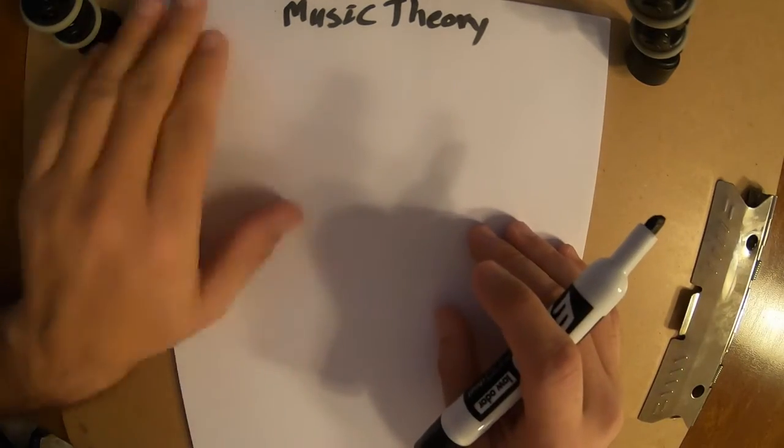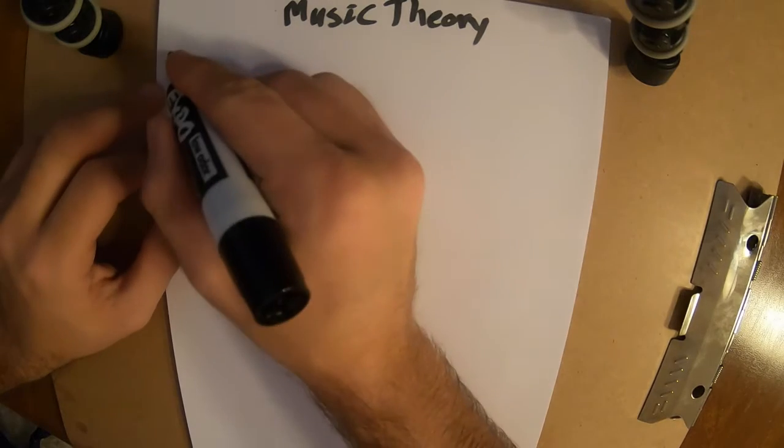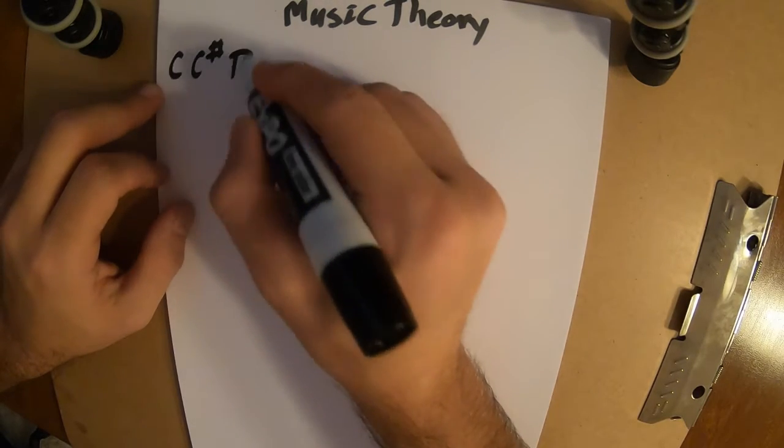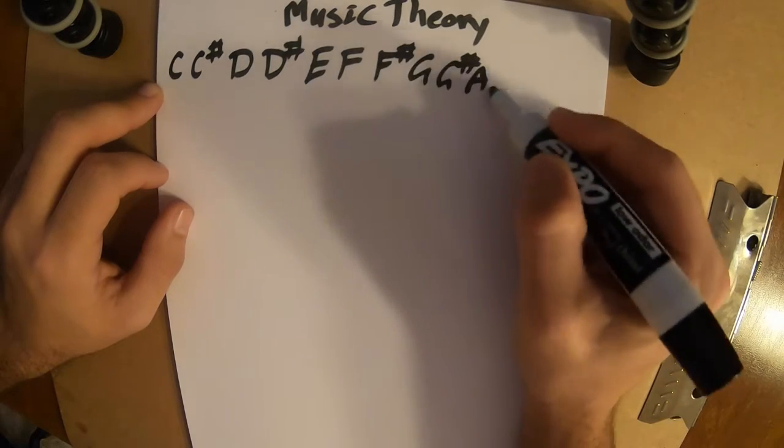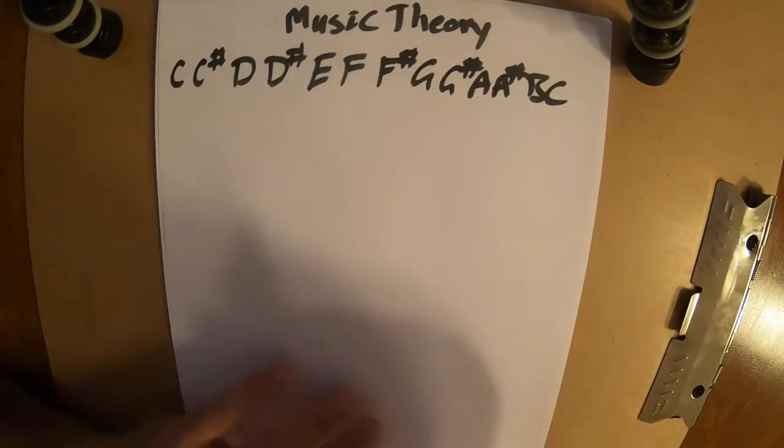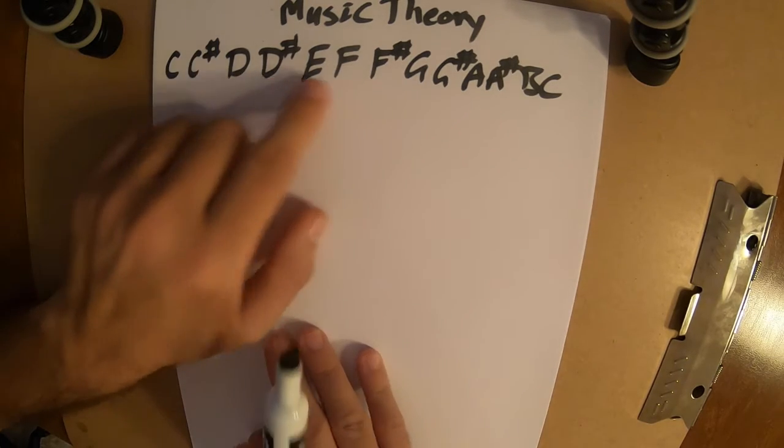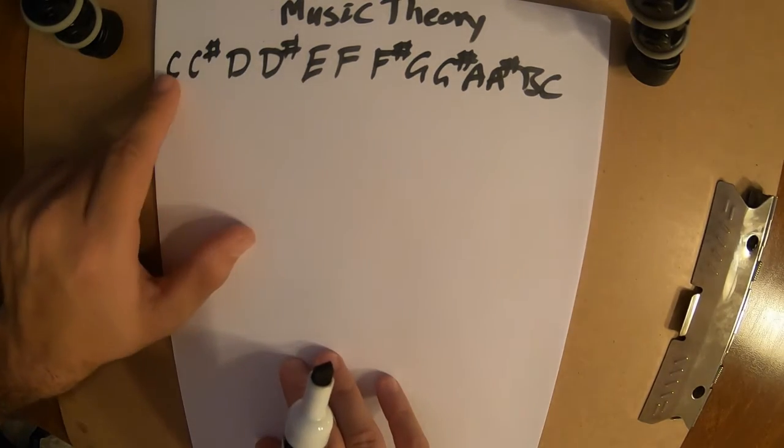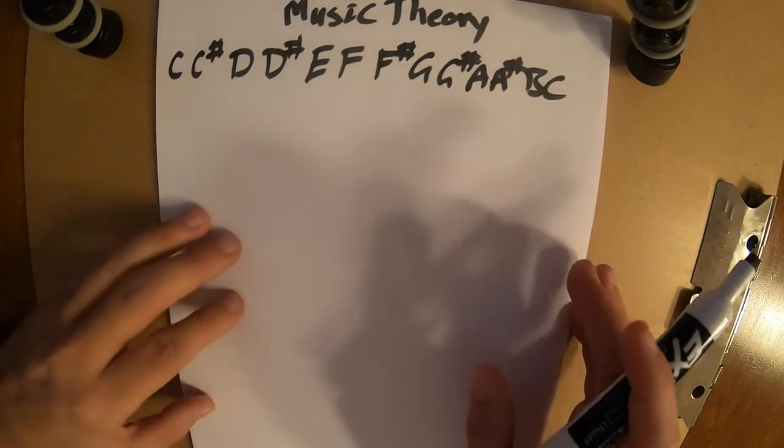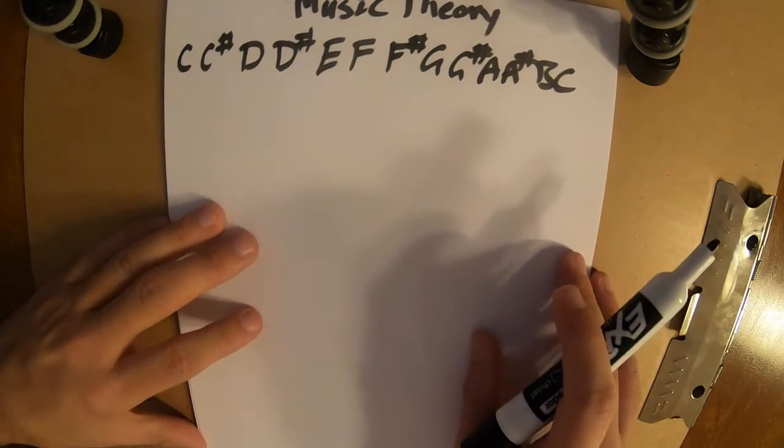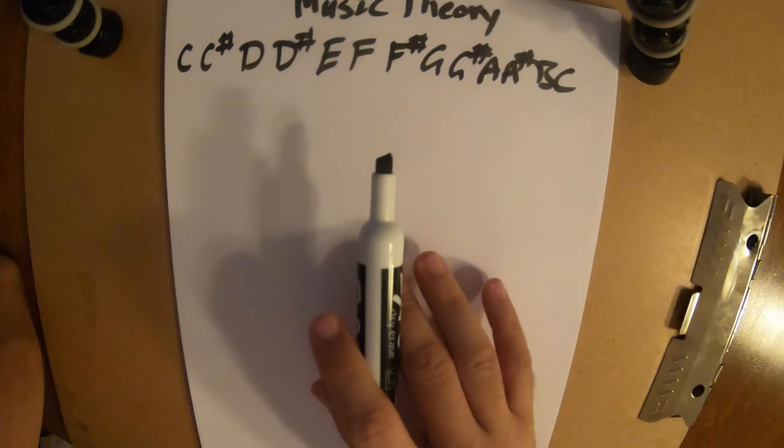So today we're just starting from the notes that are on a guitar or a piano. So we have... one, two, three, four, five sharps. One, two, three, four, five, six, seven naturals. Cool. We're good so far.